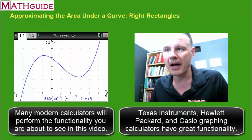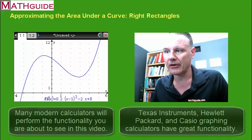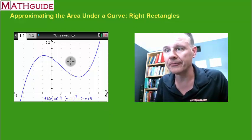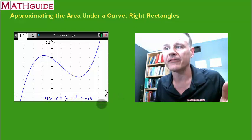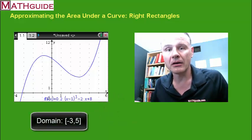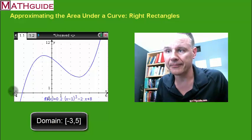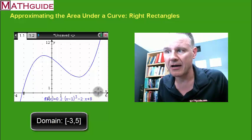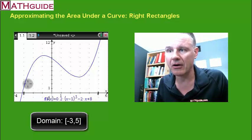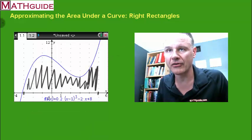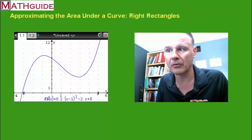So how do you use this right rectangle strategy? We're going to find the area of this curve in the domain from negative 3 to 5. In other words, I'm going to go from negative 3 all the way over here to 5, and I'm going to find the area of all this that's under the curve.